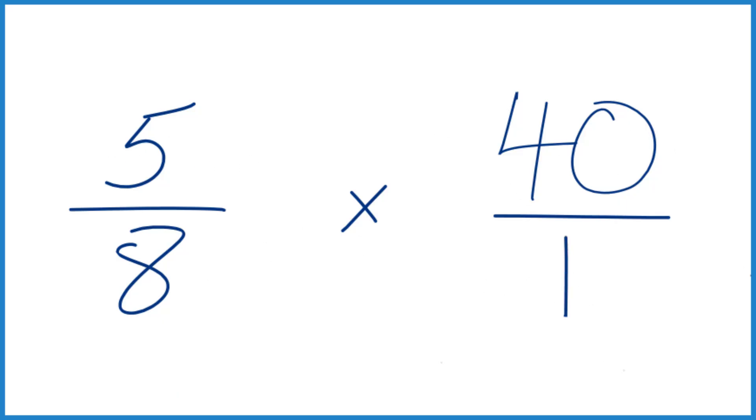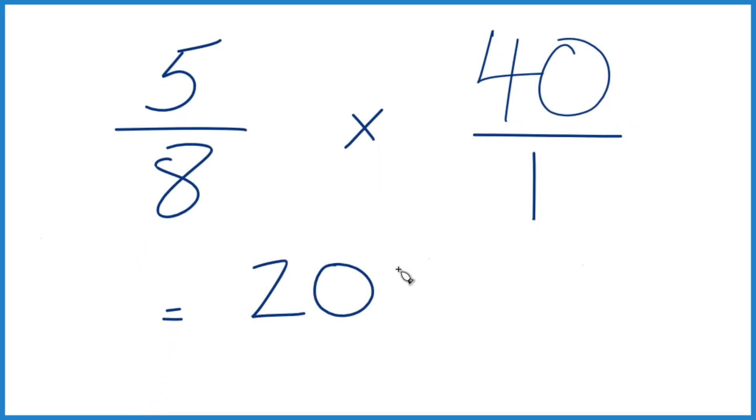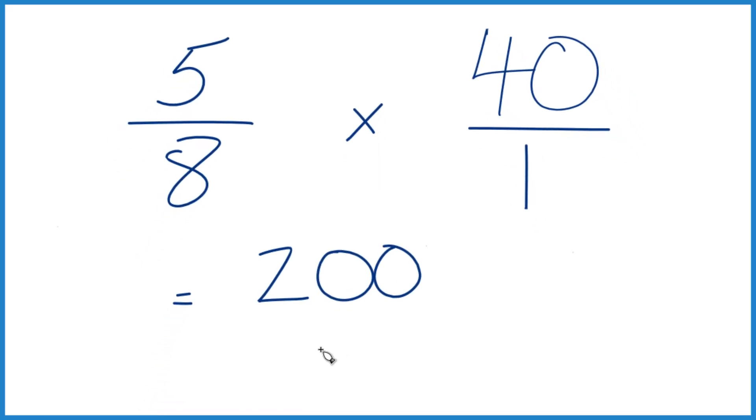but now the numerators, denominators, they line up. So we're going to multiply the numerators, then the denominators. 5 times 40, that equals 200. 8 times 1, that's 8.